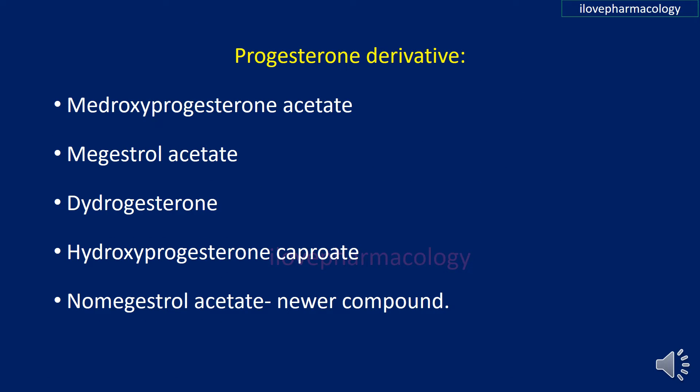Examples of progesterone derivatives include medroxyprogesterone acetate, megestrol acetate, dydrogesterone, hydroxyprogesterone caproate, and nomegestrol acetate, which is a newer compound.